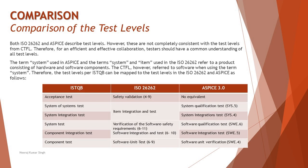Both ISO 26262 and ASPICE describe test levels. However, these are not completely consistent with the test levels from the CTFL, that is the foundation level. Therefore, for efficient and effective collaboration, testers should have a common understanding of all the test levels. The term 'system' used in ASPICE and the terms 'system' and 'item' used in ISO 26262 refer to a product consisting of both hardware and software components.